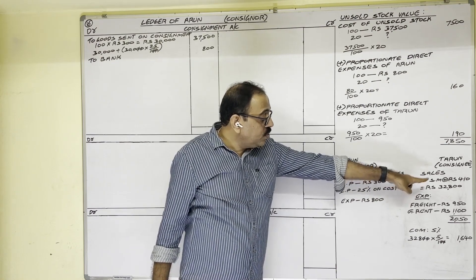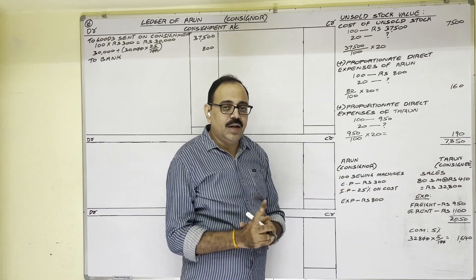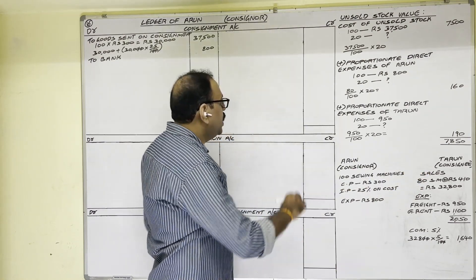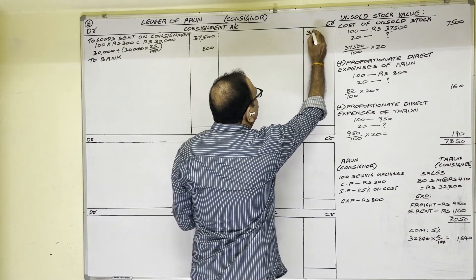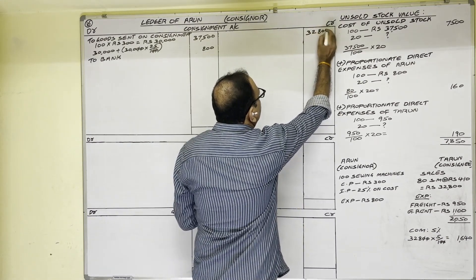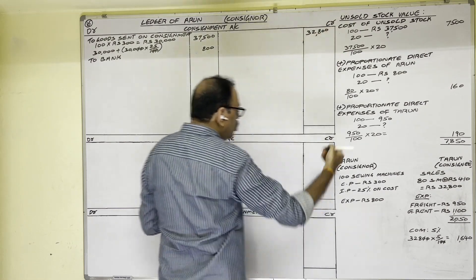The consignee sold 80 machines at 410 rupees each. Total sales is 32,800 rupees. Sale is income, so income is credited. It appears on the credit side.